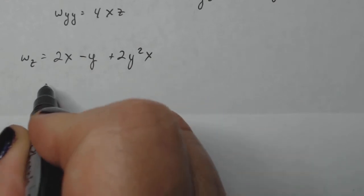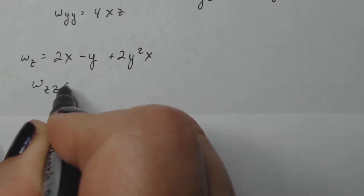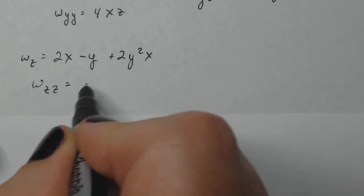All right, so let's then think W sub Z Z. No Z, no Z, no Z. So that's zero.